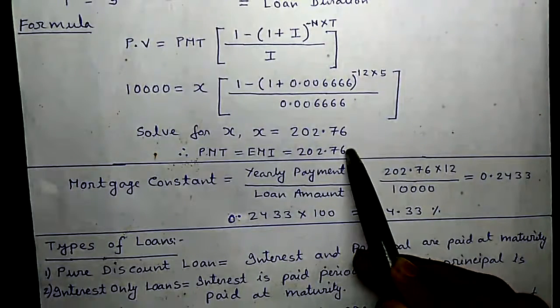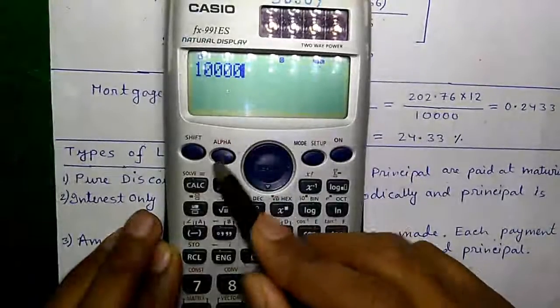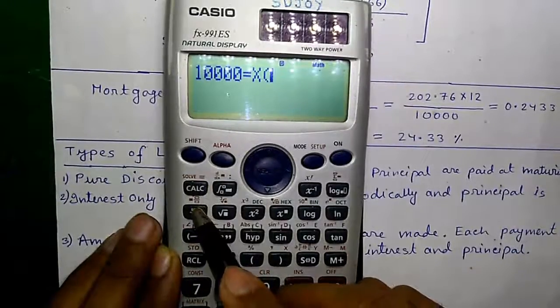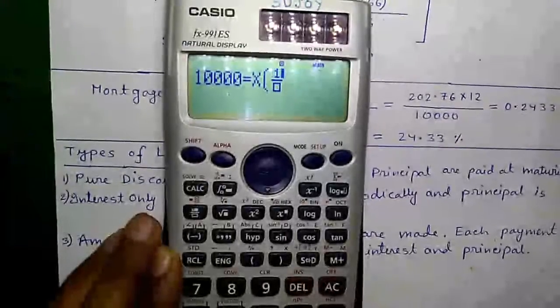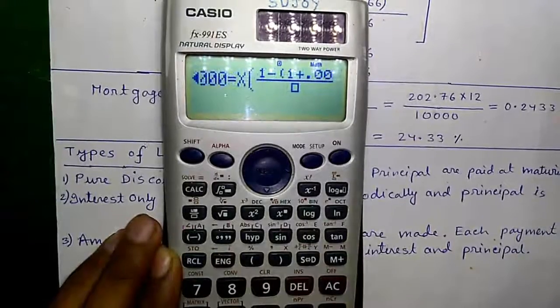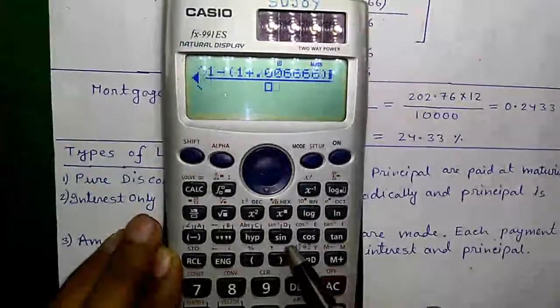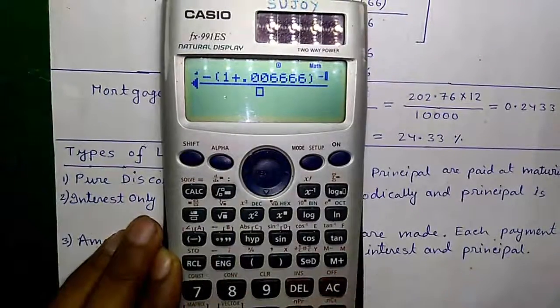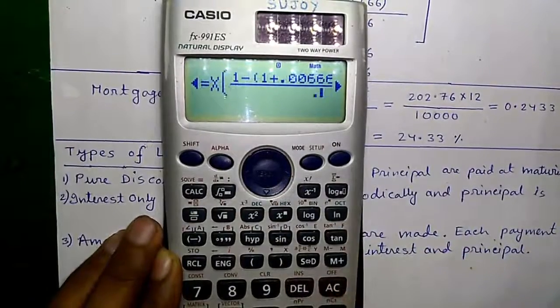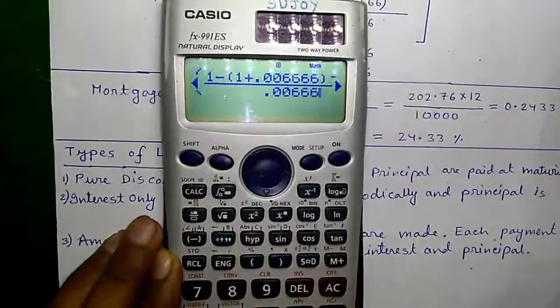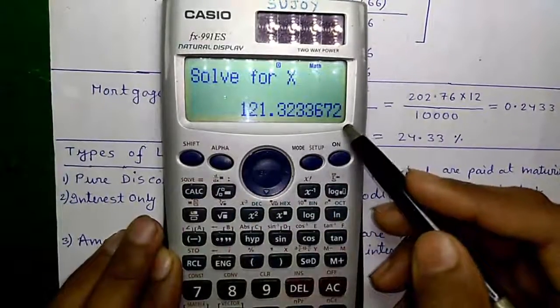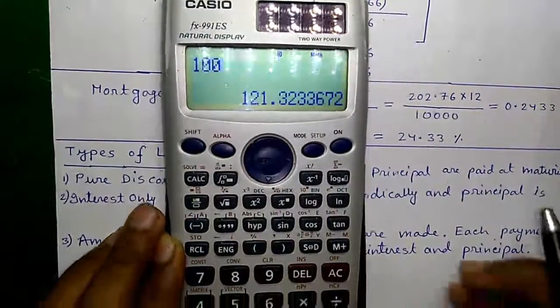Let's do it on calculator. 10,000 alpha equals alpha X times fraction [1 minus (1 plus 0.006666) to the power minus 12 times 5 divided by 0.006666]. Press SHIFT and CALC. Enter your guess for X, say 100, and press equals.